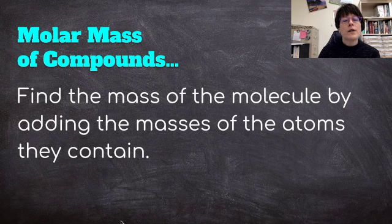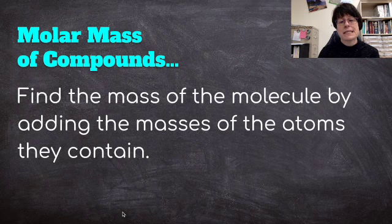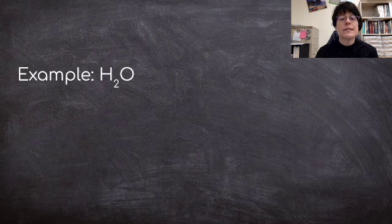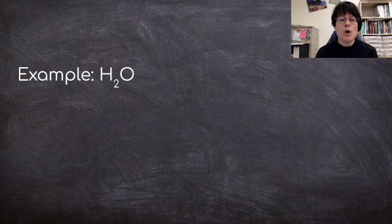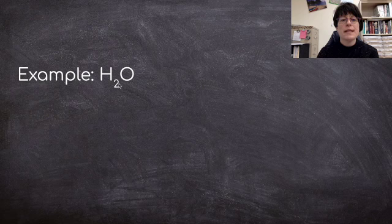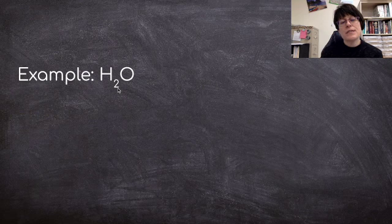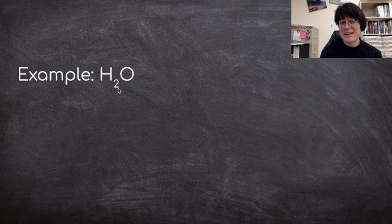So we can also do this for compounds. We can find the molar mass of compounds. And to do this, we find the mass of the molecule by adding the masses of the atoms they contain. So an example is water, H2O. And if we look at water, H2O, we see that now, instead of thinking of these numbers as atoms, as we did on our periodic table as well, we're now going to think of these numbers as moles. So there are 2 moles of hydrogen and 1 mole of oxygen in water.